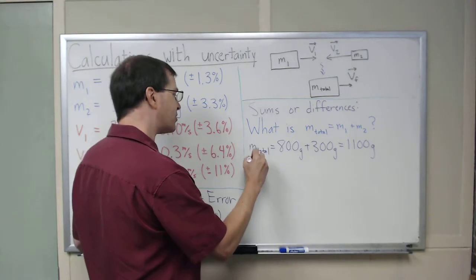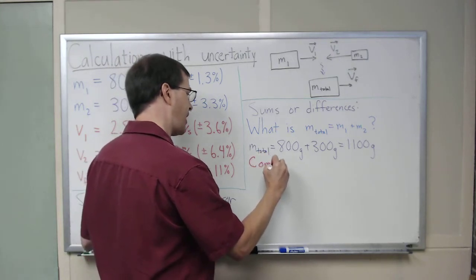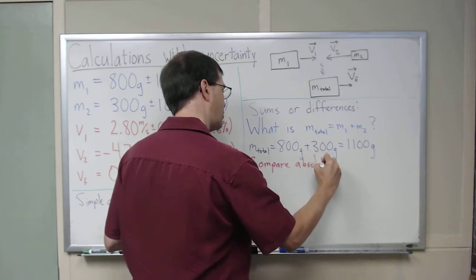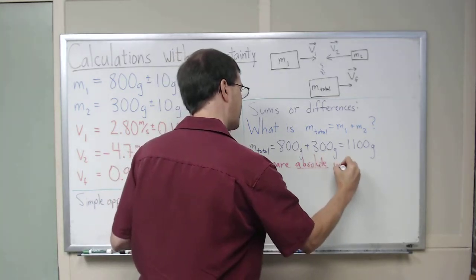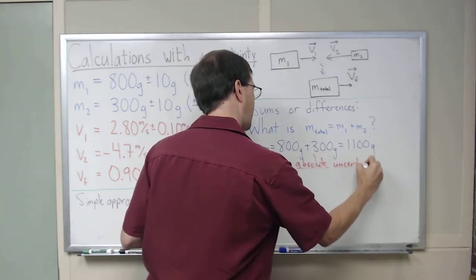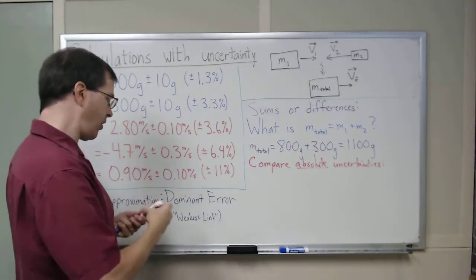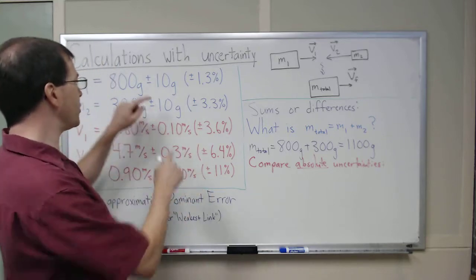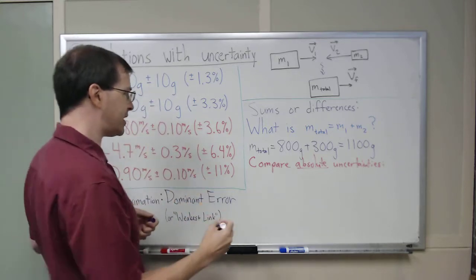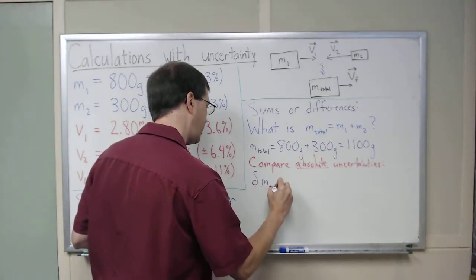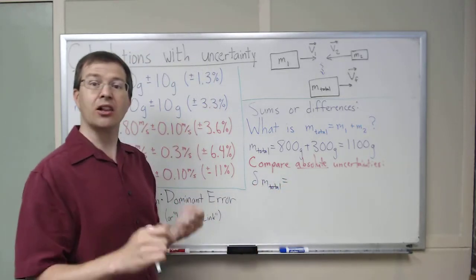In particular, for dominant error we do this simple thing: we look at these two absolute uncertainties and we say my uncertainty in m total is just going to be the larger of the two.